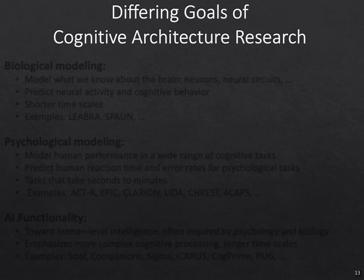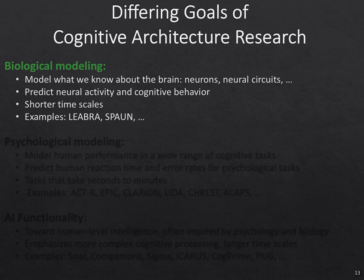Although there are many commonalities in cognitive architecture research, there are also significant differences. I've tried to lay out three basic differences in the goals of researchers. At one level, there are people interested in biological modeling — they want to build systems out of neurons and ask how we get neural systems to do the basics of the manipulations we see in other cognitive architectures. The coin of the realm here is to predict neural activity and cognitive behavior, usually at shorter timescales. Two examples are Randy O'Reilly's system Libra and Chris Eliasmith's system SPAUN.